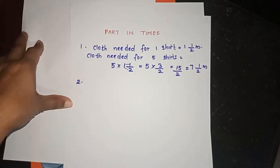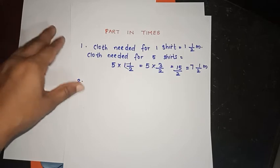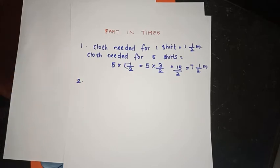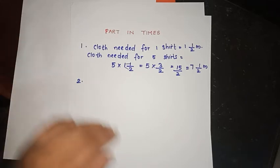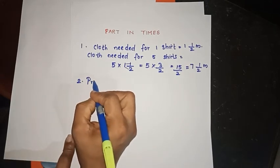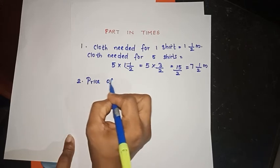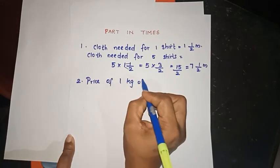The second question: the price of 1 kg of okra is 30 rupees. What is the price of 2.5 kg? The price of 1 kg of okra is 30 rupees.